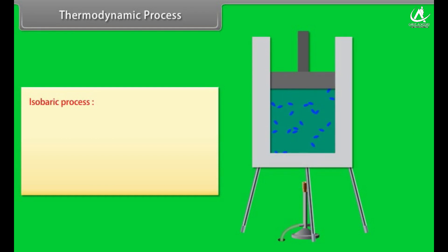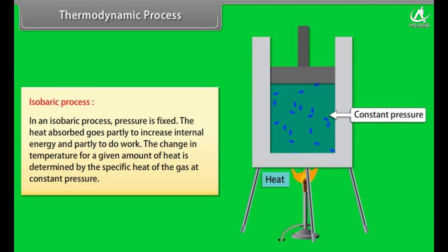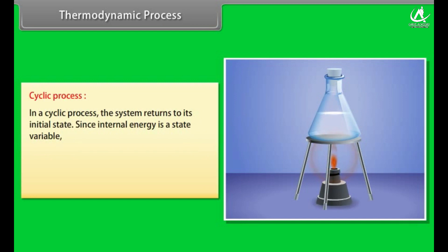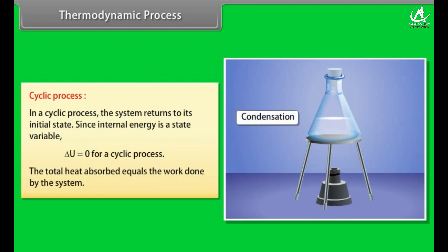In an isobaric process, pressure is fixed; the heat absorbed goes partly to increase internal energy and partly to do work, and the temperature change is determined by specific heat at constant pressure. In a cyclic process, the system returns to its initial state; since internal energy is a state variable, ΔU = 0, and the total heat absorbed equals the work done by the system.